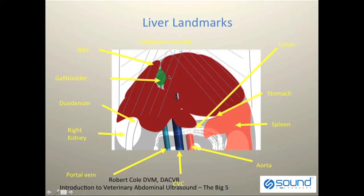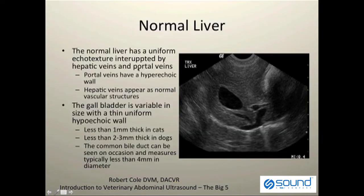The gallbladder sits towards the center of the liver, usually between the right medial and quadrate lobes. The normal liver parenchyma has a uniform echo texture, interrupted by portal veins and hepatic veins. The portal vein can be identified by its hyperechoic wall, while the hepatic veins have very thin walls and appear as typical vascular structures.